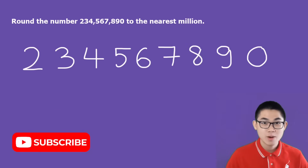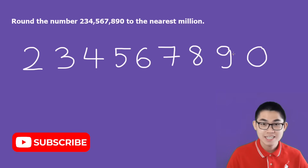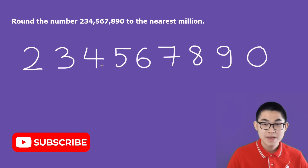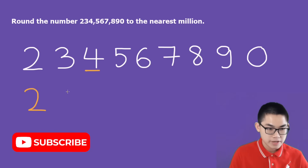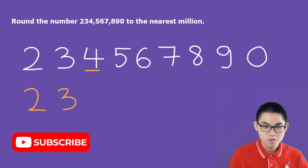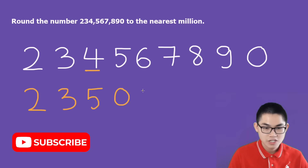Let's do one last problem and round this number to the nearest million. Here is the ones place, tens, hundreds, thousands, ten thousands, hundred thousands, and million. We copy the 2 and the 3. And here is 5, so 4 becomes 5. And the rest are just zeros.